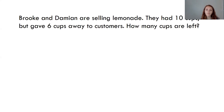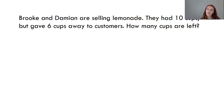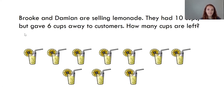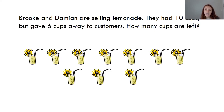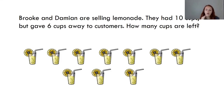So let's start at the beginning. Brooke and Damien are selling lemonade — I could draw a picture of Brooke and Damien, but I don't really need to. They had 10 cups, let me draw 10 cups of lemonade. One, two, three, four, five, six, seven, eight, nine, ten. 10 cups of lemonade. But then it said they gave six cups away to customers. So it says they gave six cups away. Do you think I'm going to be drawing more lemonades? No. I have to show that six of these cups were taken away.